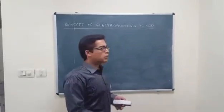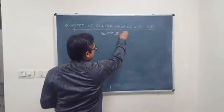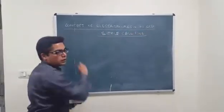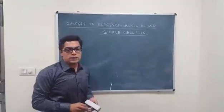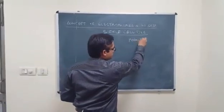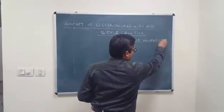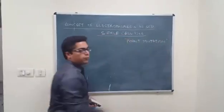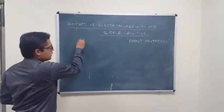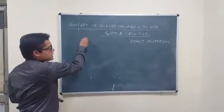We will have a brief recap about the problem in a patient having sickle cell disease. Sickle cell disease is a condition caused because of a point mutation, and what we find because of this point mutation is that there is a change in the beta chain of the hemoglobin, particularly at the 6th position.